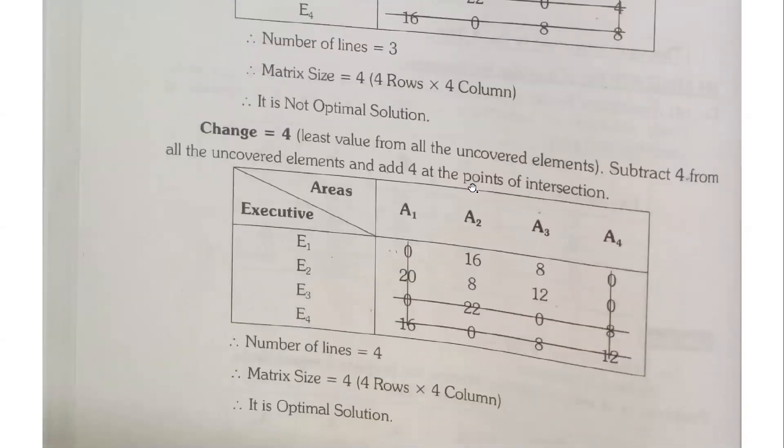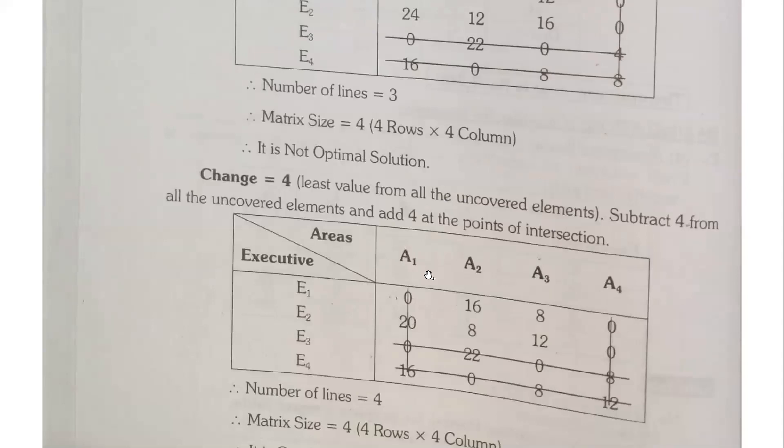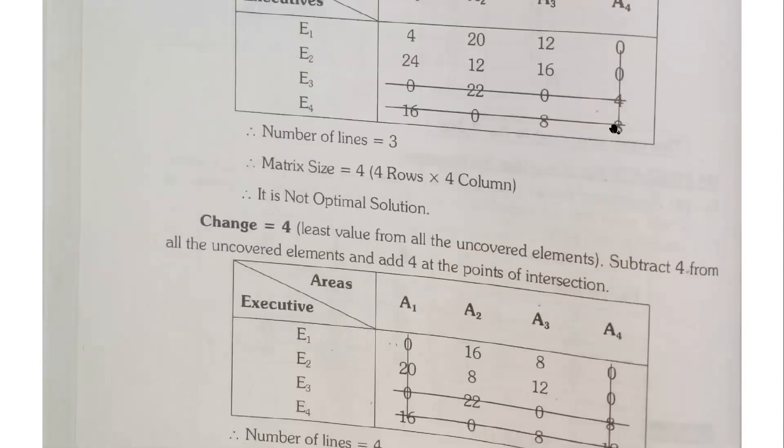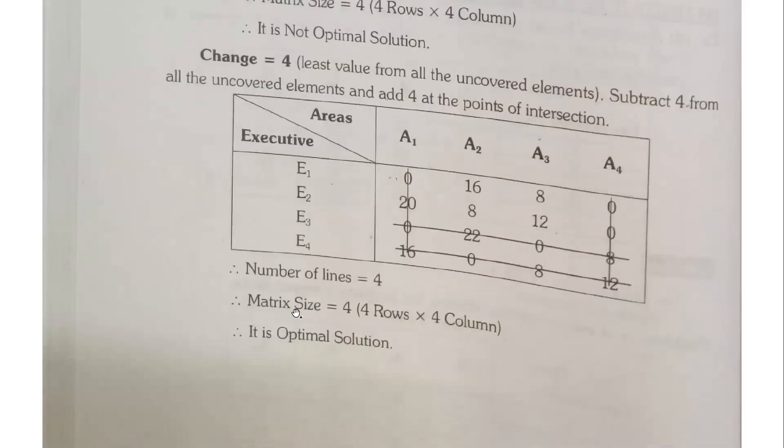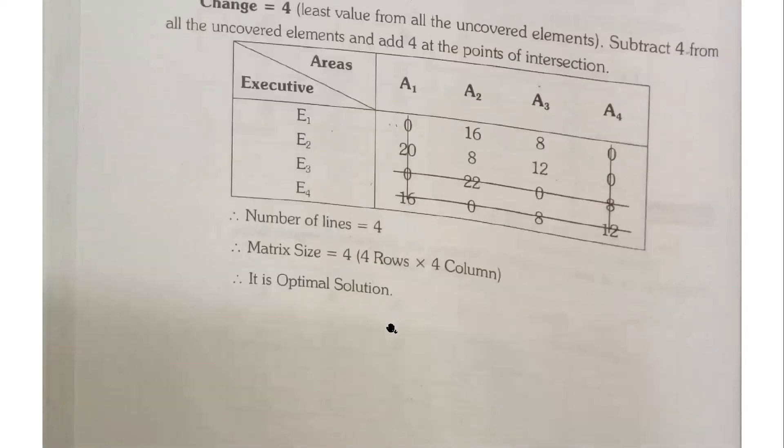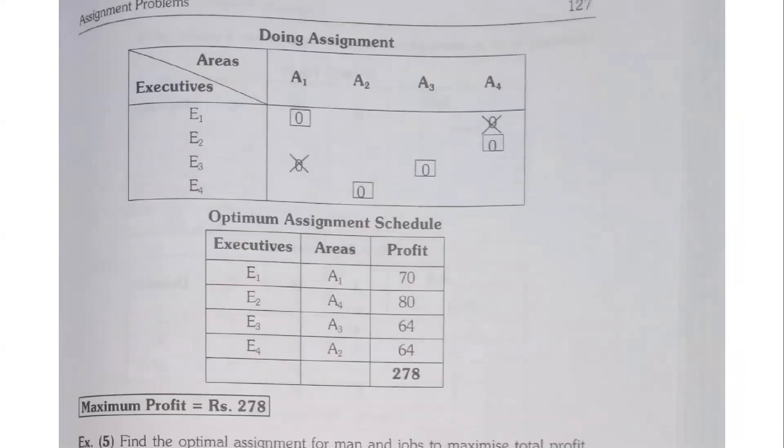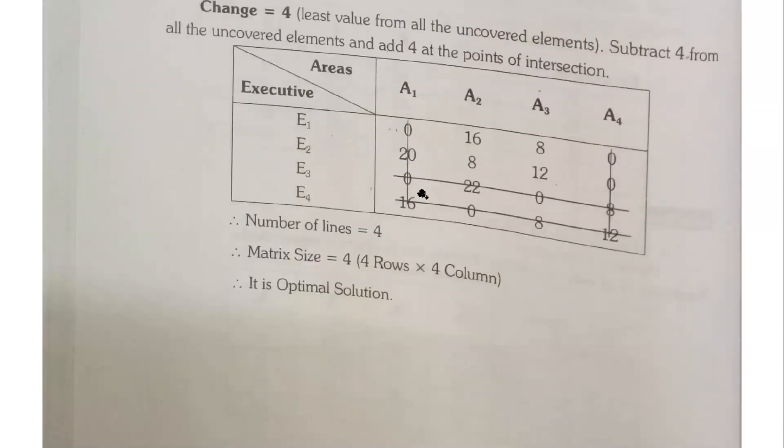Now the number of lines and number of matrix are equal. Number of lines are 4 and matrix size is 4, that is 4 rows and 4 columns, so it is an optimal solution. This is the final solution. We have zeros double here, here is double zero.